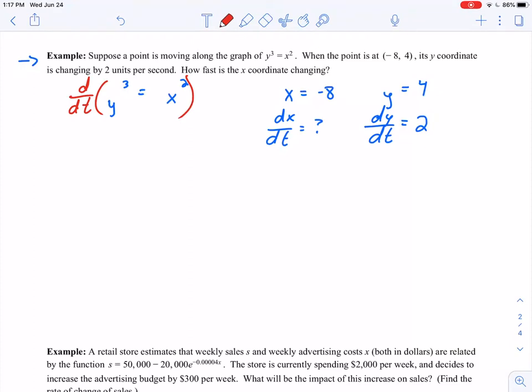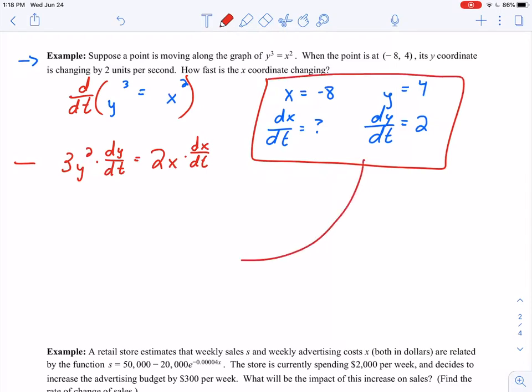Derivative of y cubed, that's going to be 3y squared times either y prime or dy over dt, equals, on the right-hand side, derivative of x squared. That's going to be 2x times the derivative of x with respect to time. So either x prime or dx over dt.